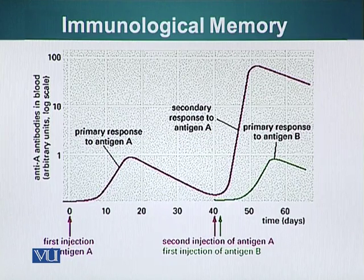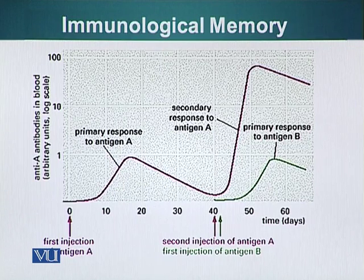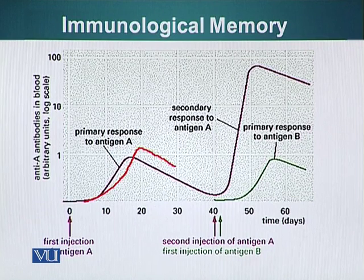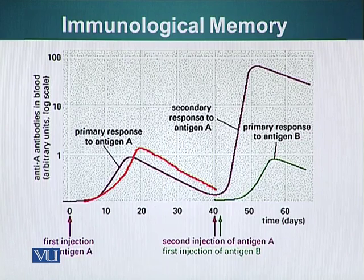Here is a graph. It shows the first exposure of the animal to antigen A. The immune response is gradual — it rises and then gradually declines. There is a sharp increase in immune response, and then the decline is more gradual.